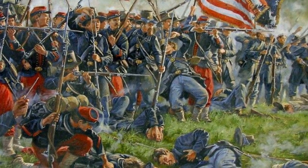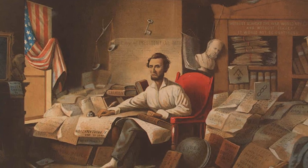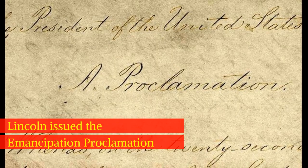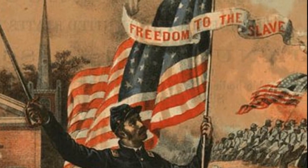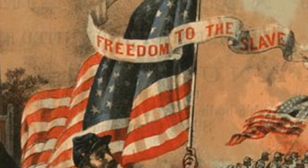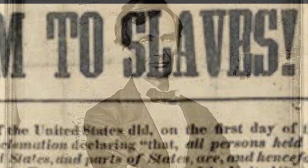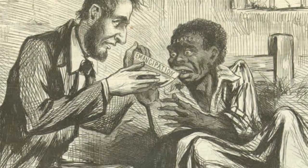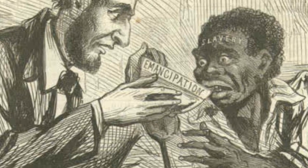Lincoln pondered a new strategy and did something that he said he'd never do. He issued the Emancipation Proclamation, literally meaning the Freedom Announcement. The Emancipation Proclamation declared that all enslaved people in the rebelling Confederate states were free. But did the rebelling Confederate states think of Lincoln as their president, as the leader of their country, the Confederate States of America? No. So would they free their enslaved people because Lincoln said so? No.